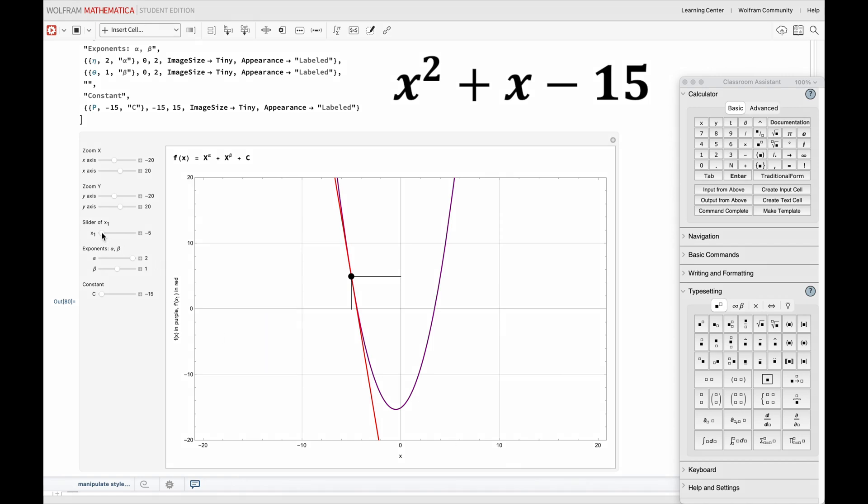So as I change the value of x along this slider here, we see that the derivative of this function changes accordingly by pivoting upwards as you increase x, which is what the red line is doing.